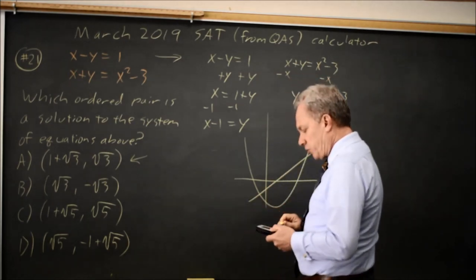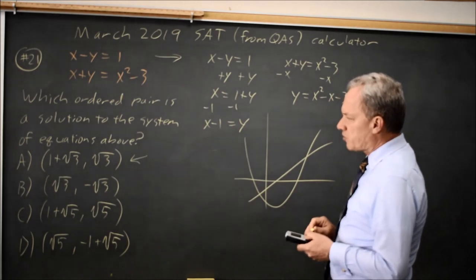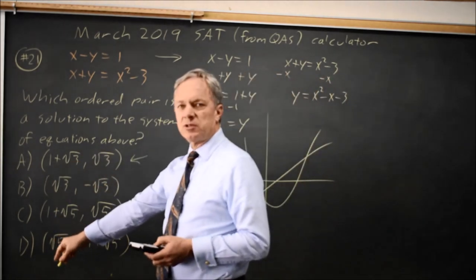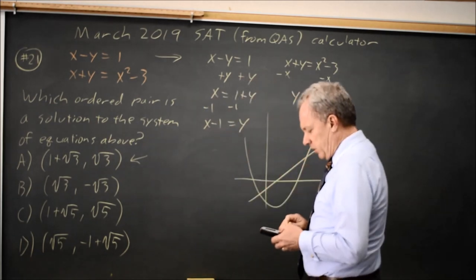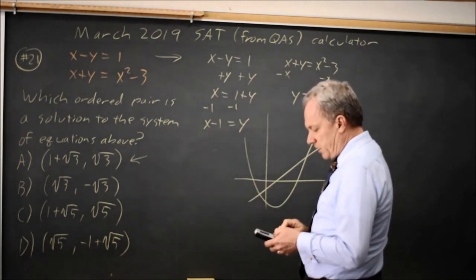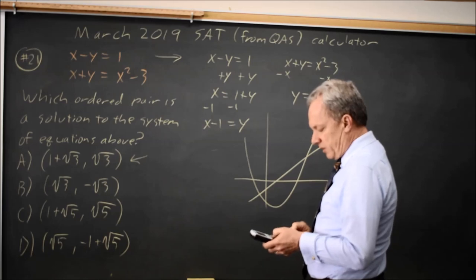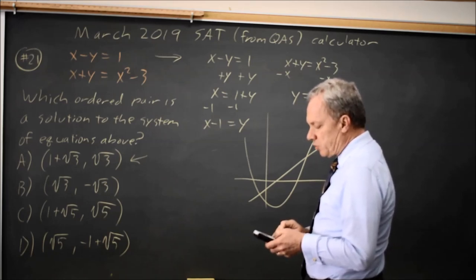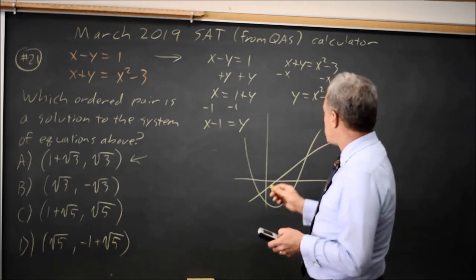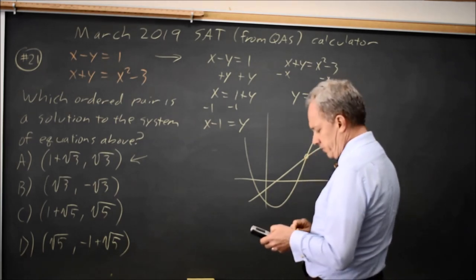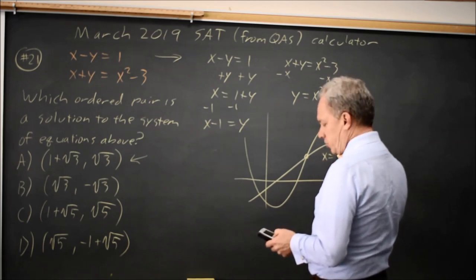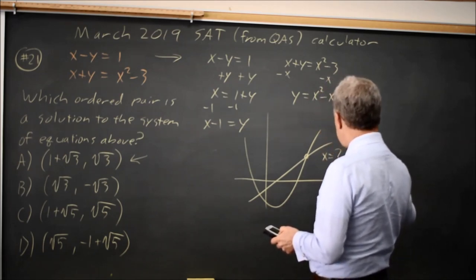And if I find the points of intersection, one of them, the x-coordinate, is negative, which does not match any of my choices, so I want the other one. And if I use second calc, choice 5 is intersect, find the intersection of the graphs, hit enter twice, then move over near the positive point of intersection, hit enter a third time, and I get x equals 2.732-ish, and y equals 1.732-ish.